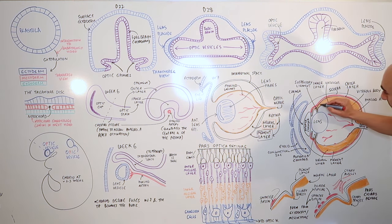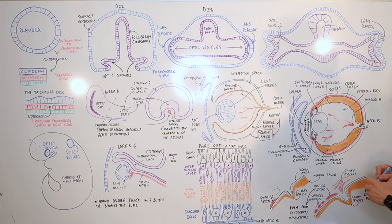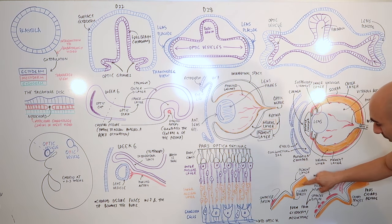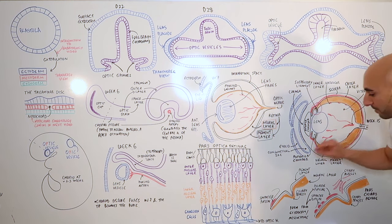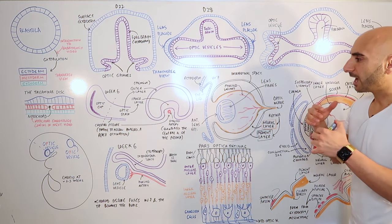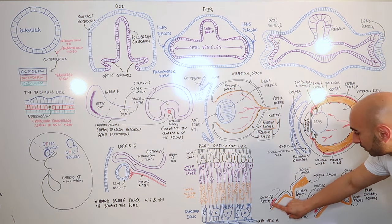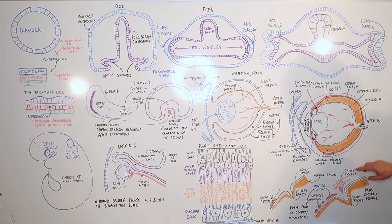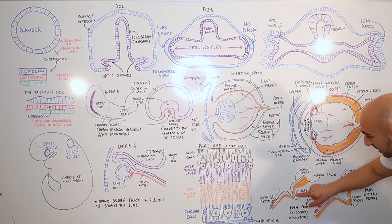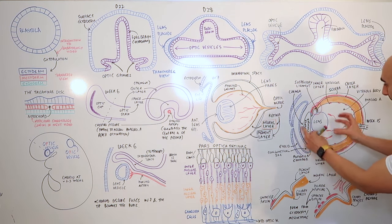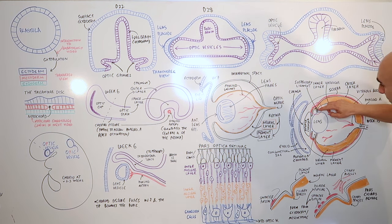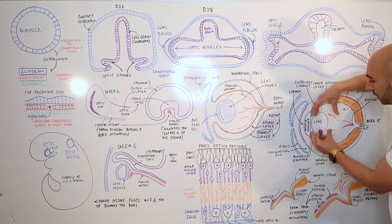The aqueous humor is produced by the ciliary process. Looking at the development of the ciliary process, sphincters, and ciliary muscles: we have the neural layer in orange, then the layer on top, with mesenchyme surrounding it. The undifferentiated mesenchyme cells differentiate into the sphincter pupillae, dilator pupillae, and the ciliary muscles. The ciliary process is what creates the aqueous humor.